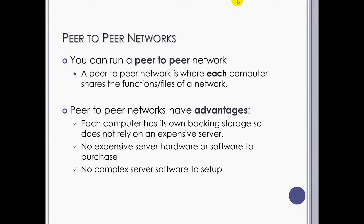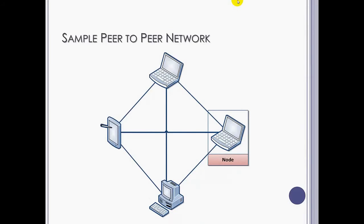A peer-to-peer network is when you don't have a central server — just a collection of machines connected together. Peer-to-peer networks have their own advantages: there's no expensive server hardware and no difficult server software to set up, so cost-wise it can be cheaper. A peer-to-peer network is simply all the machines connected together with no central server controlling anything. The slight disadvantage is that it can be very difficult to control security, but you don't need the expense or technical know-how of setting up a dedicated server.